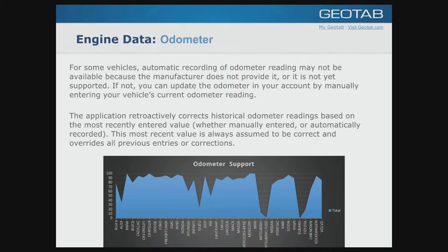For odometer, some vehicles provide it directly from the ECM — generally 2008 and newer. If the engine isn't providing odometer information, you can update it manually in the MyGeotab database by entering the current reading, and then our system will calculate odometer going forward based on GPS distance. The application retroactively corrects historical odometer readings based on the most recently entered value, which is always assumed to be correct.